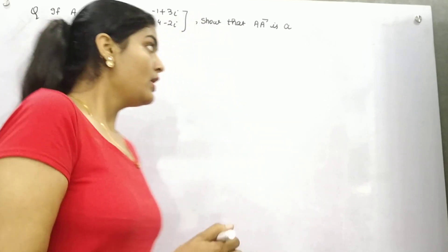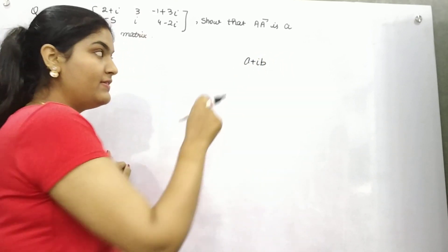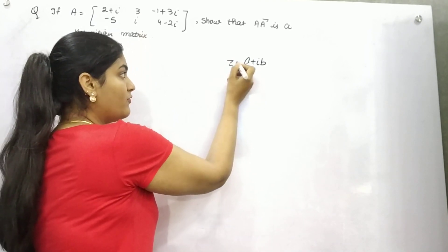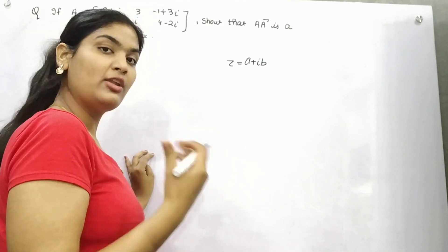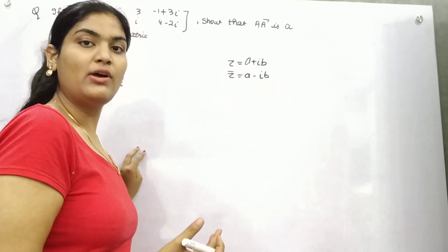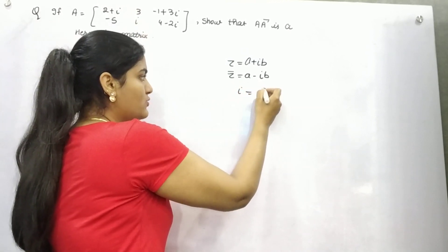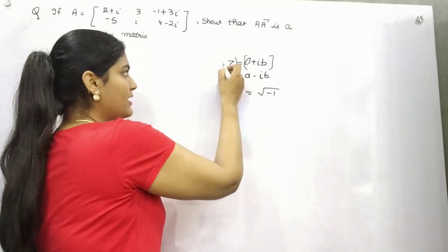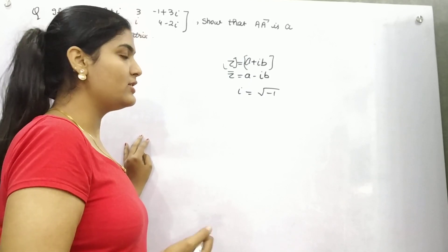Let me tell you how. You know that a plus iota b is a complex number, right? In which a is the real part and b is the imaginary part. Now, if you want to find out the conjugate of this number — let's say it is denoted by z — then it will be a minus iota b. That means you have to change the sign of the imaginary part. The value of iota is root minus one. And if you arrange this in the form of a matrix, then it will be a complex matrix and we can transform it into Hermitian.